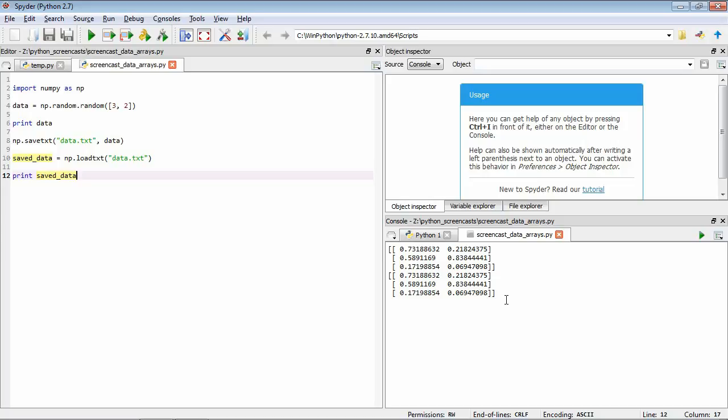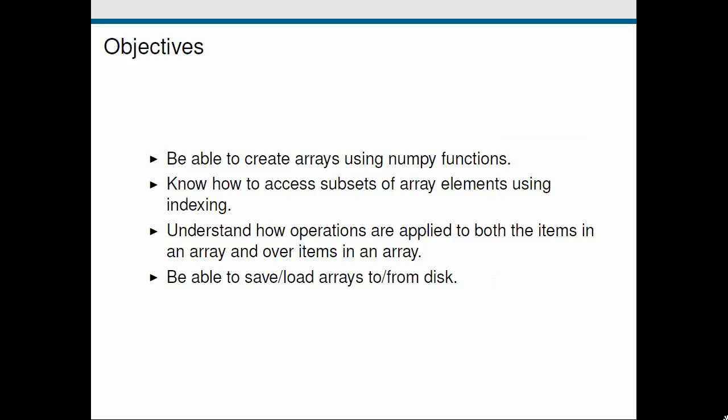Going back to our objectives: we've looked at how to create arrays using numpy functions like ones, random number generators, and arange. We looked at how to access subsets of array elements using indexing — including column indexing for rows and columns, and boolean indexing. We saw how to use operations on all items in an array and over selected items. Finally, we looked at how to save and load arrays to and from disk. See you in the next screencast.